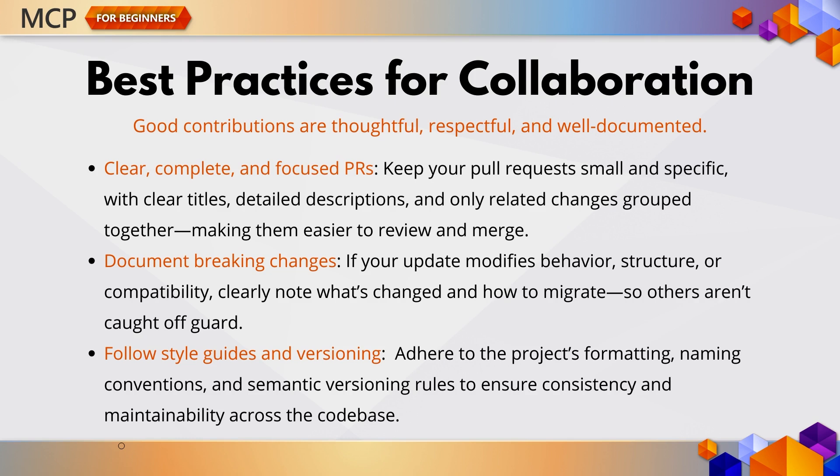So what makes a good contribution? Well, it starts with starting small. Fix a typo. Write a test. Answer a GitHub discussion question. From there, follow the project's style guide, document your changes, and submit focused pull requests. And remember, collaboration isn't just about the code — it's about communication. Whether you're opening a PR or reviewing someone else's, prioritize clarity, correctness, and completeness. Be thoughtful about version compatibility. And always, always document breaking changes.